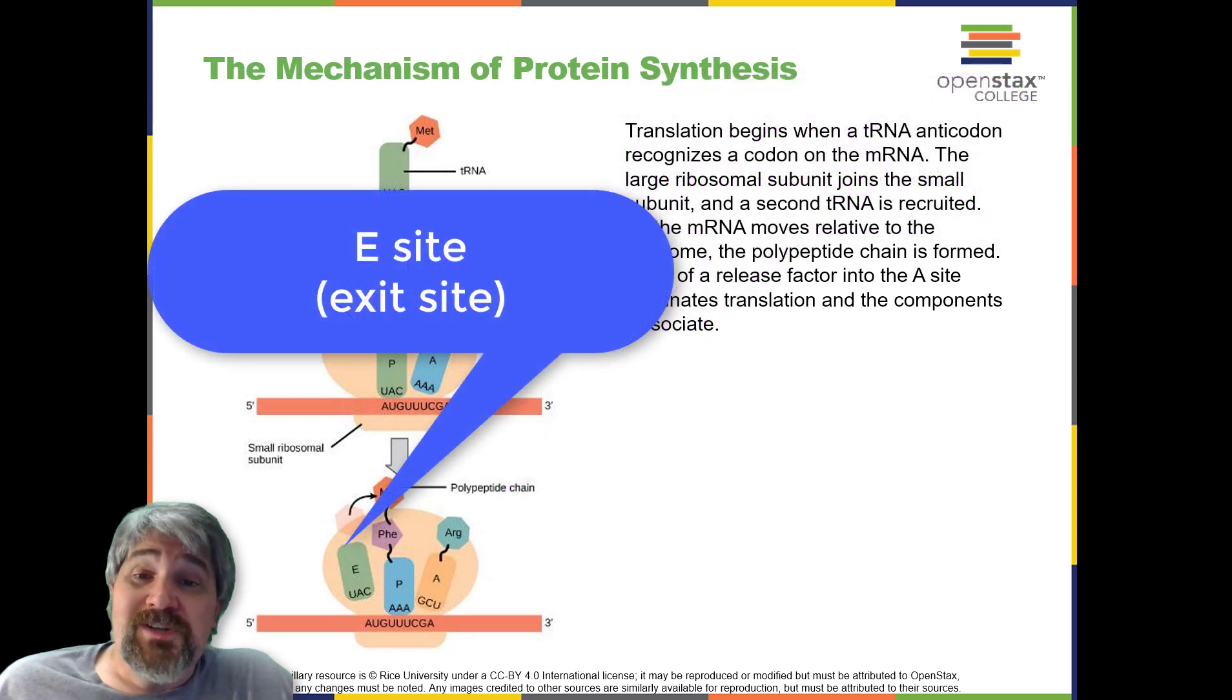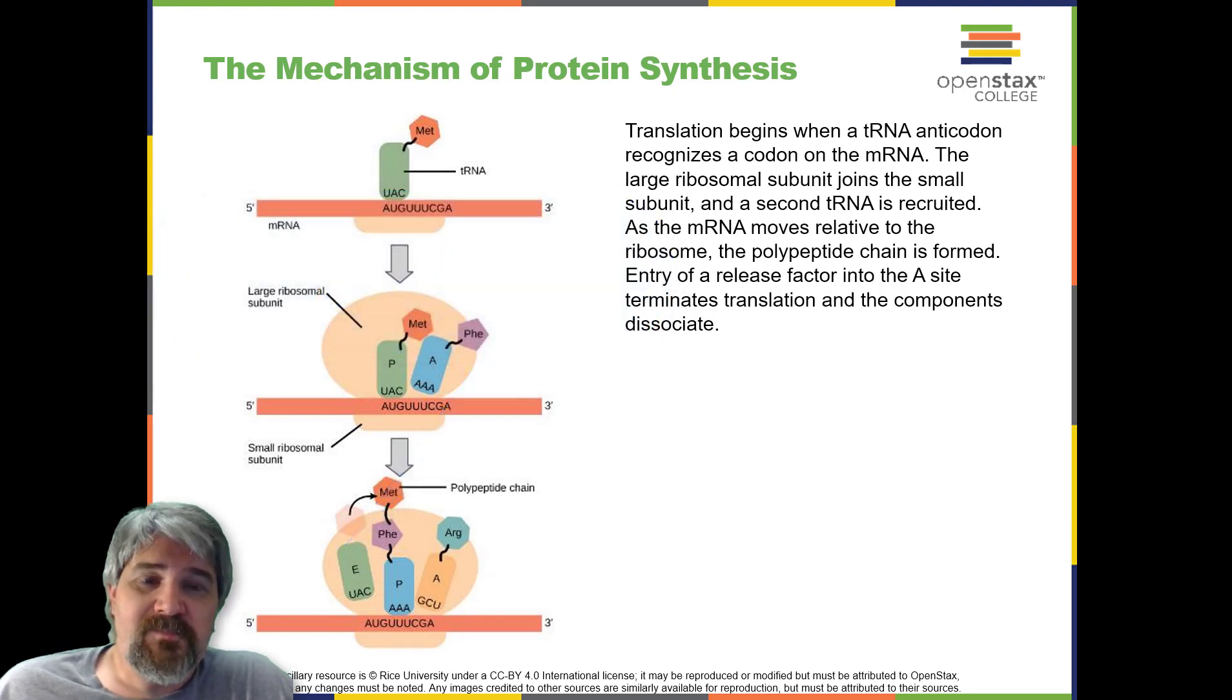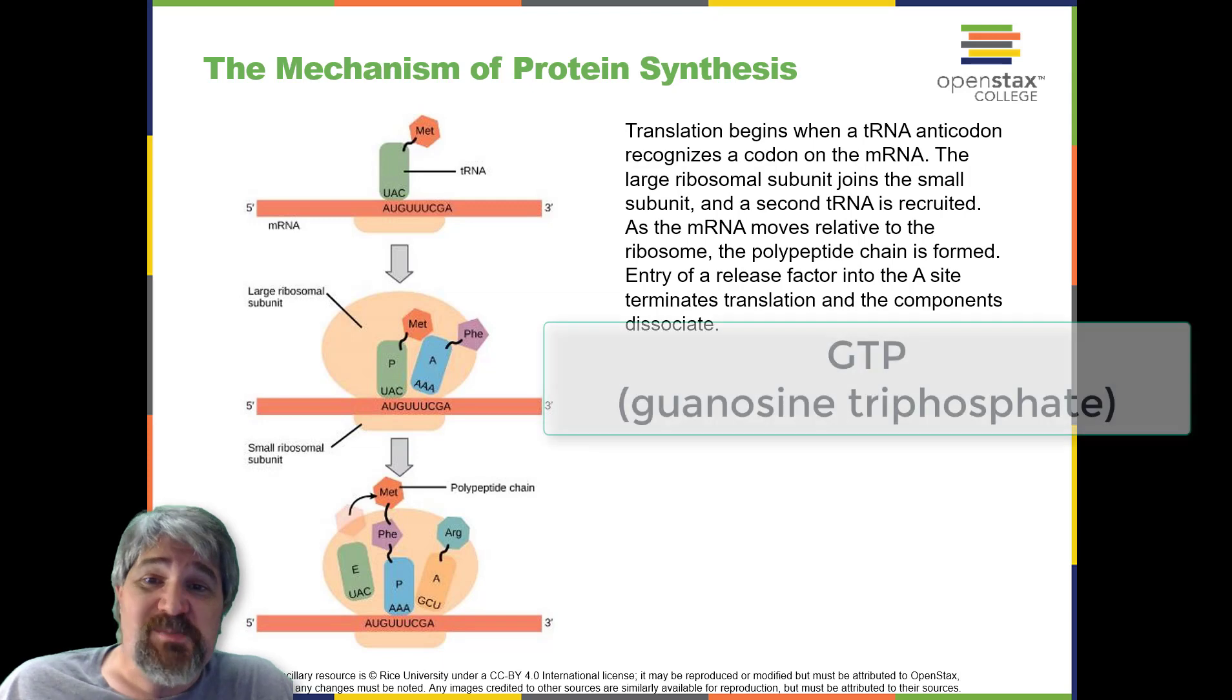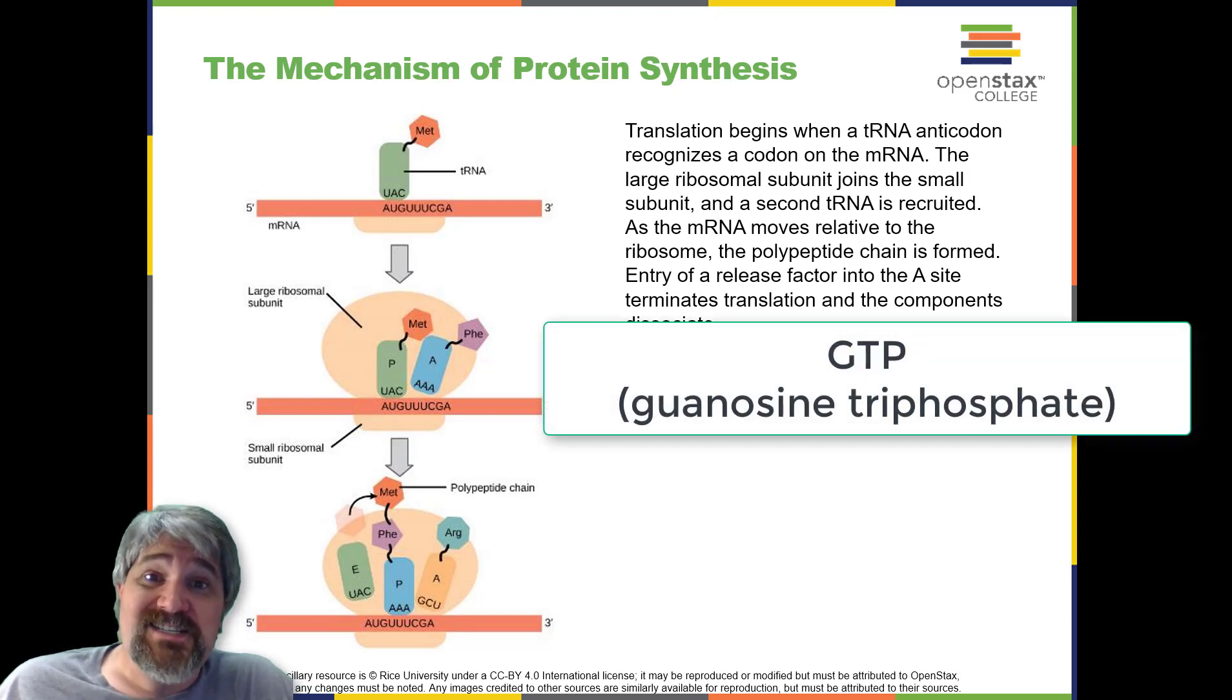The E site releases dissociated tRNAs so they can be recharged with free amino acids. The ribosome shifts one codon at a time, catalyzing each process that occurs in the three sites. With each step, a charged tRNA enters the complex, the polypeptide becomes one amino acid longer, and an uncharged tRNA departs. The energy for each bond between amino acids is derived from GTP, a molecule similar to ATP.